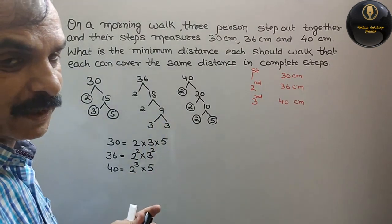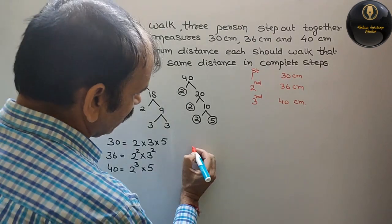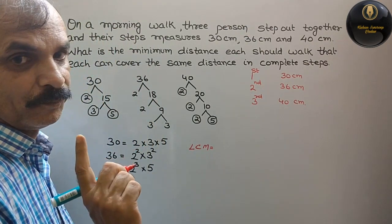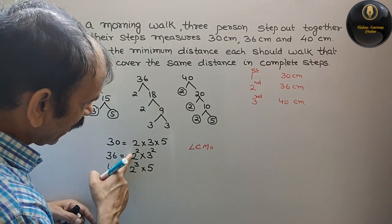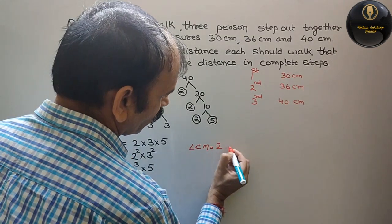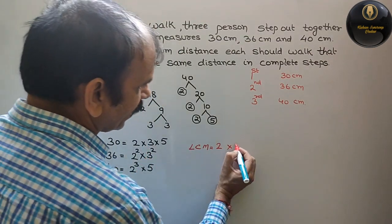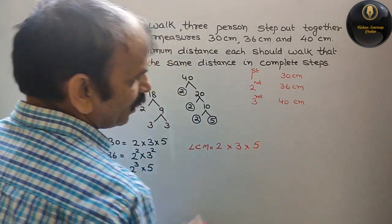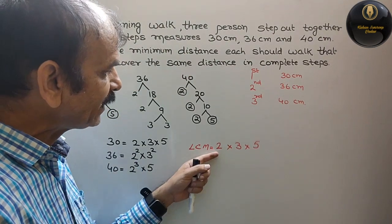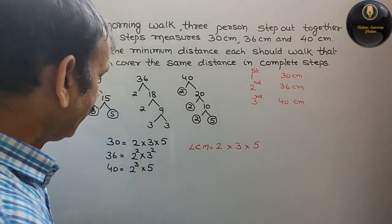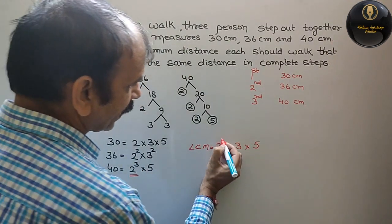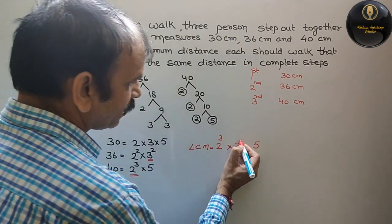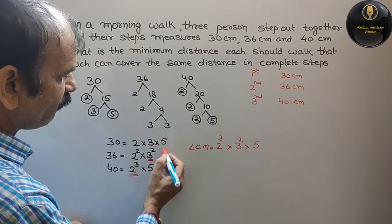Okay. See, we have to find LCM of our numbers. So 2 appears as 2, 2 square, 2 cube. The highest power is 2 cube. 3 appears as 3 and 3 square. Highest power is 3 square. And 5 appears. So this is